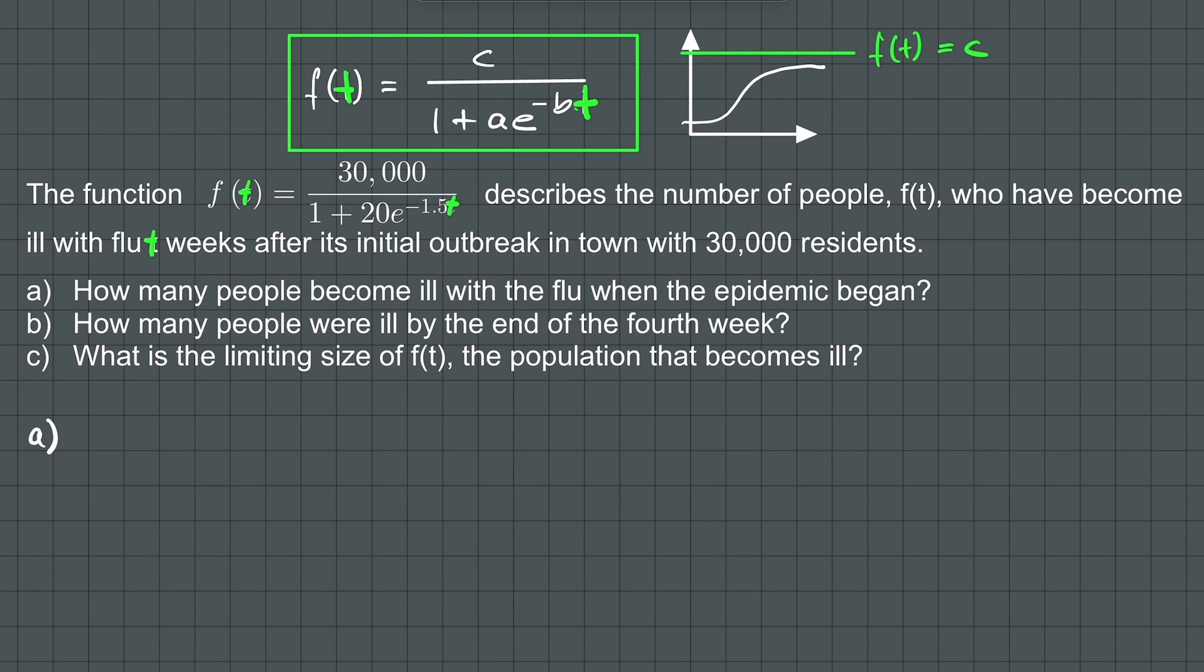We start by t equals 0 because that's the time at the beginning of the flu epidemic. So when we substitute 0 for t, we can find the number of people who were ill at the beginning of the epidemic.